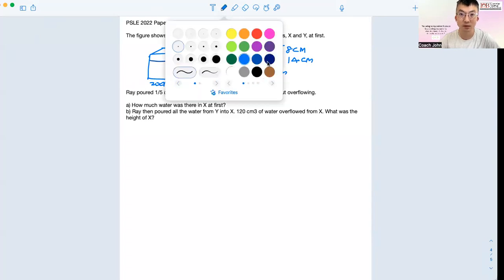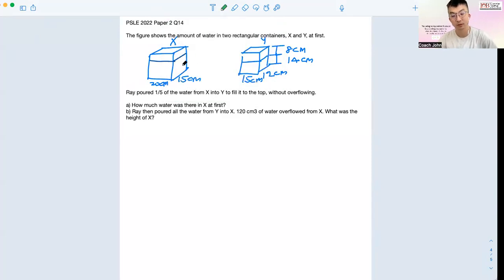Take some time to pause the video and read through the question. It's very important to understand the question. You have two containers, X and Y. At first, the water in X is only filled until here - this is a total of five units because I'm talking about one out of five. I'm going to cut away one unit, and then this one unit will go into this container, and it should be filled to the top without overflowing.